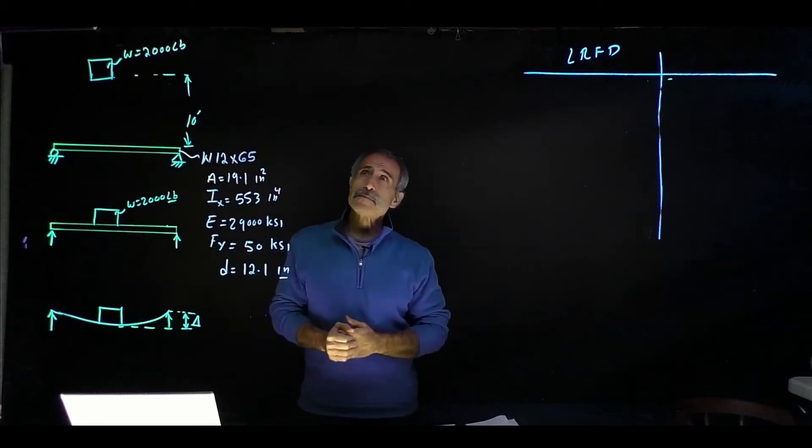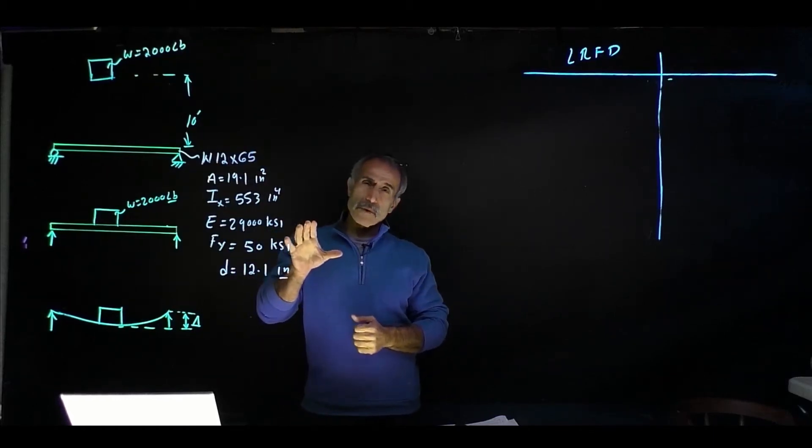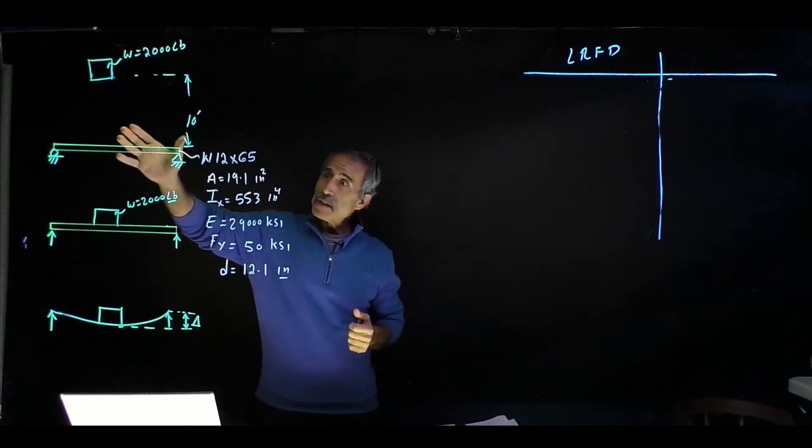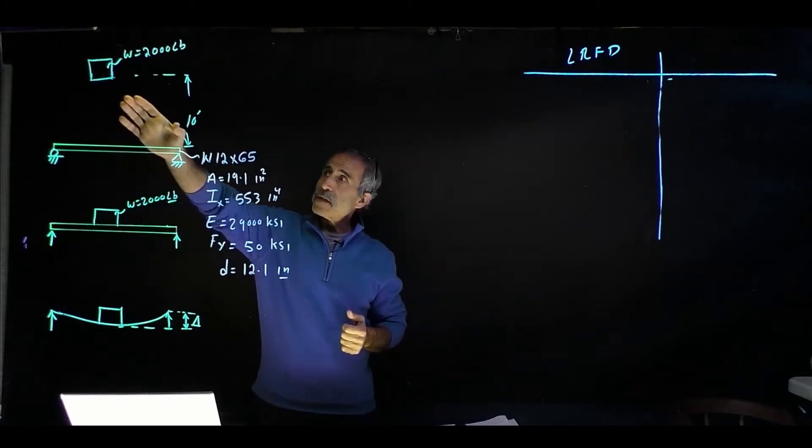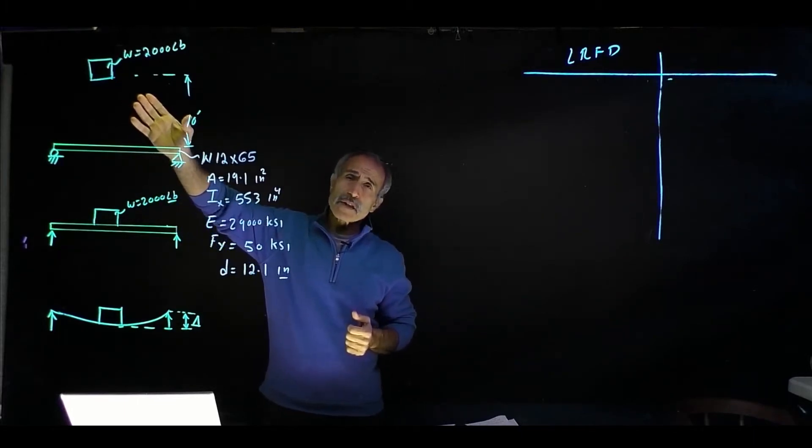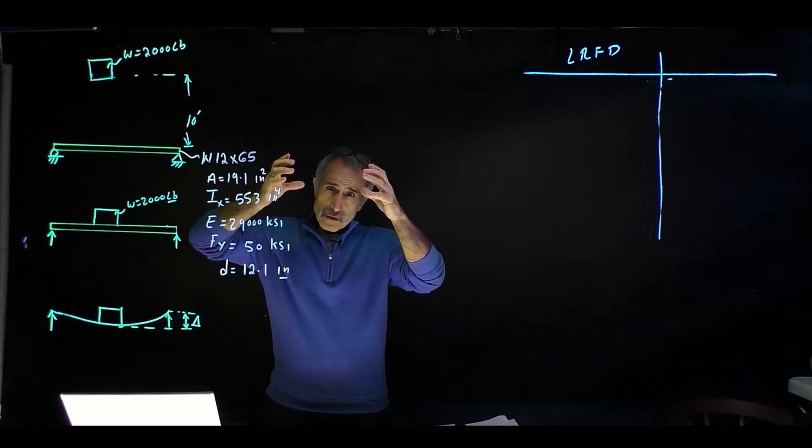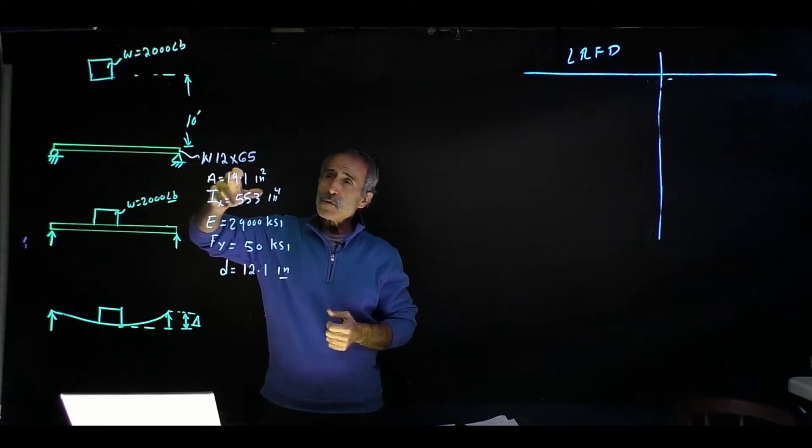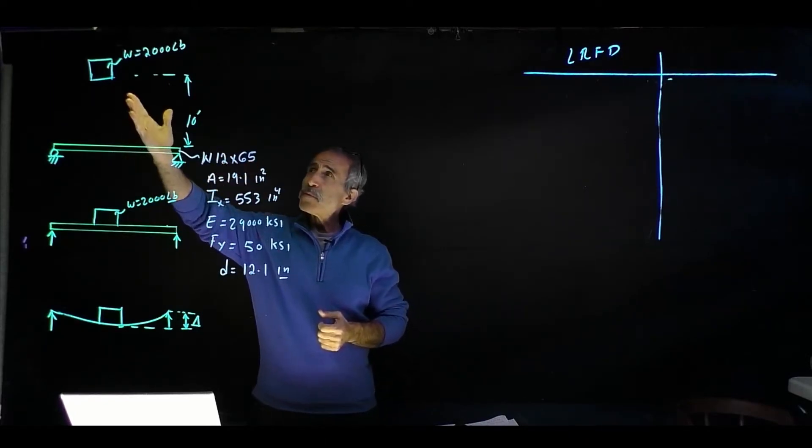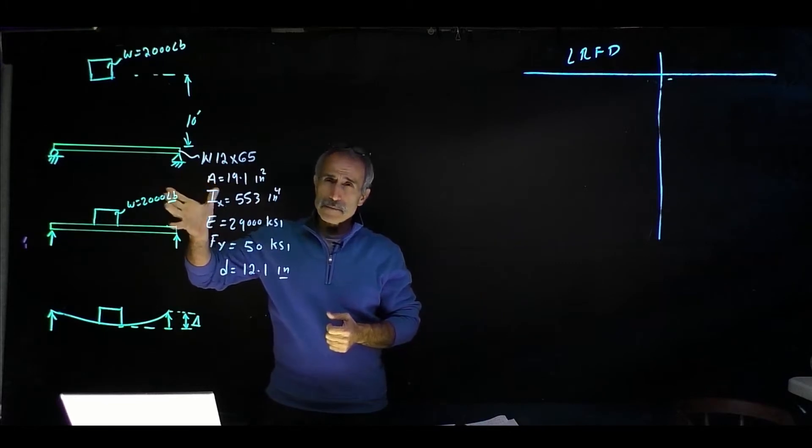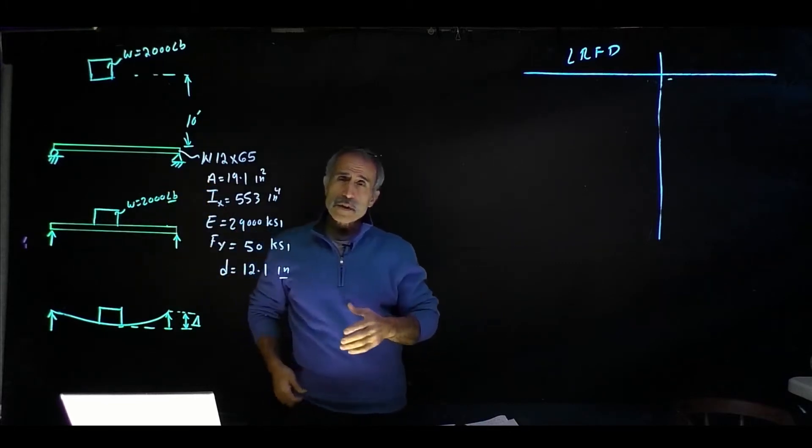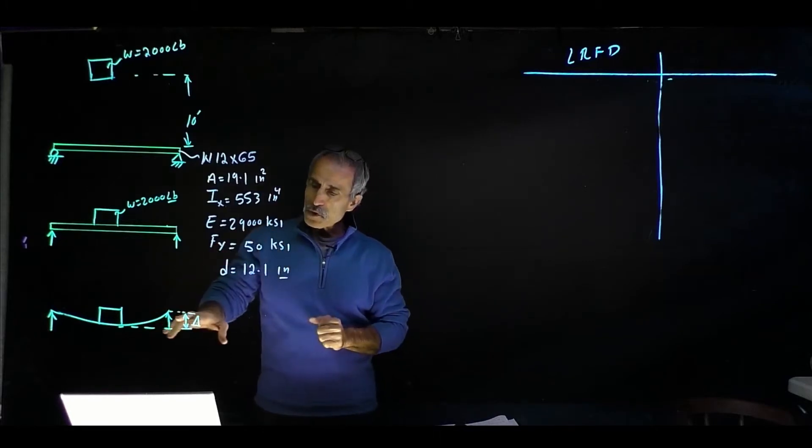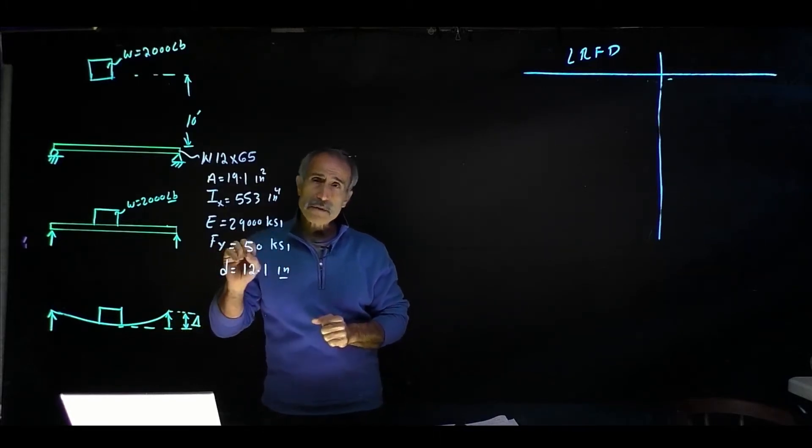Hello and welcome back. In this lecture I want to talk about impact load. What happens when an object, let's look at this example. This is some type of unit on top of a roof and somehow punches a hole through the roof and falls into the floor. Say the floor beam is a W12 by 65 and the thing weighs about 2,000 pounds. What would happen? We're going to calculate the impact load, but before I do this problem I want to tell you how important deflection is.